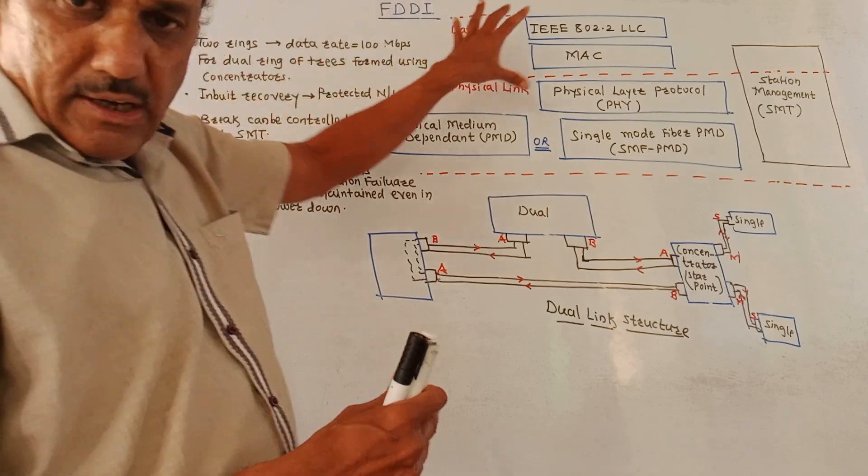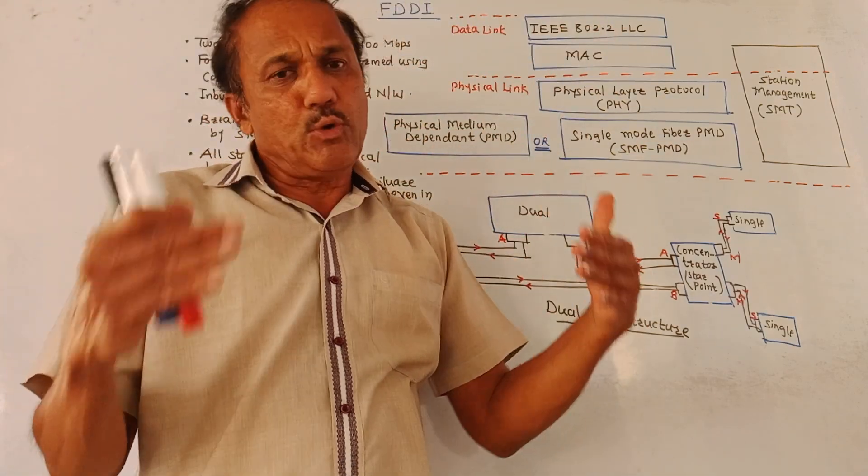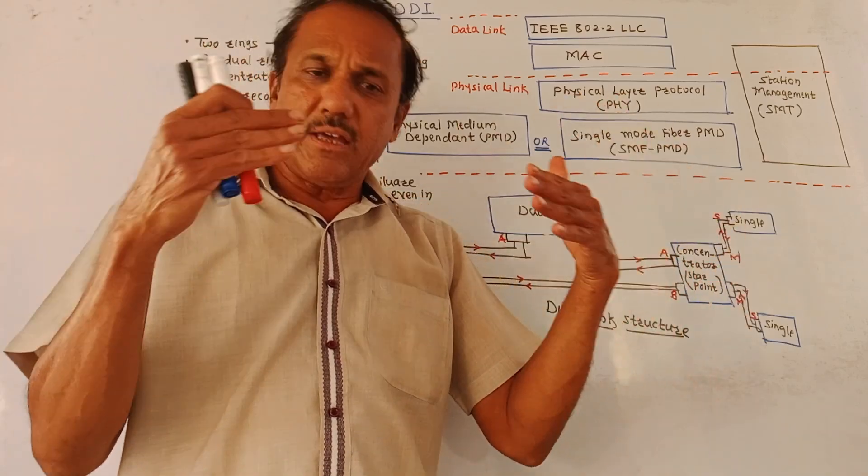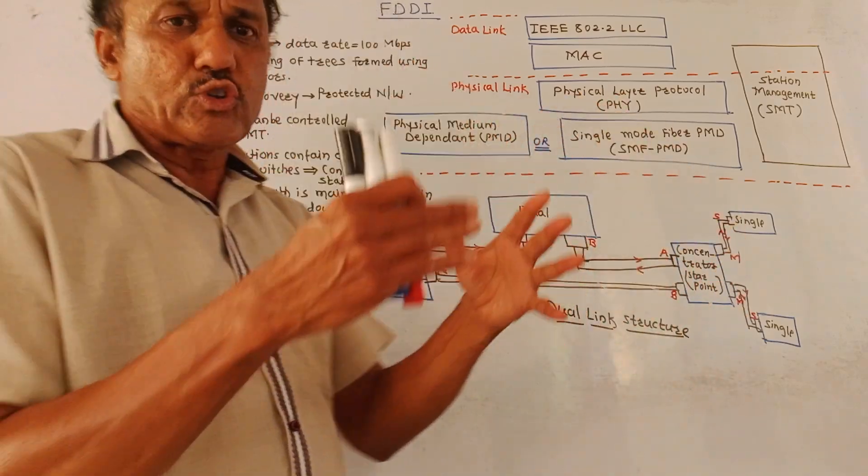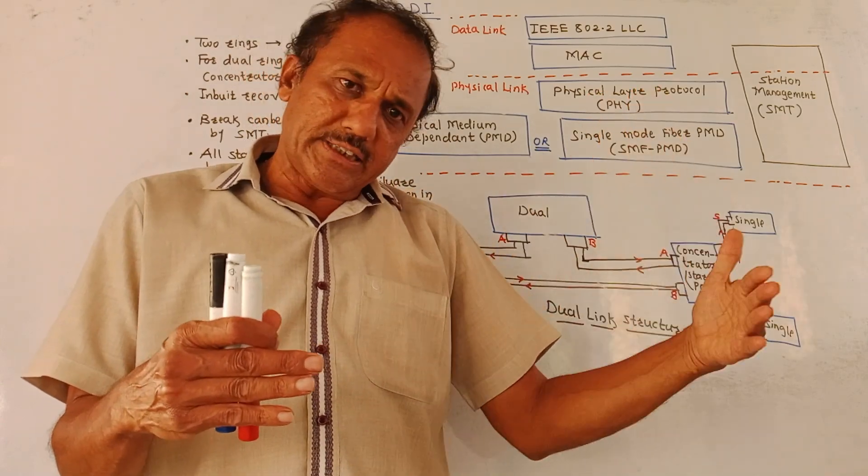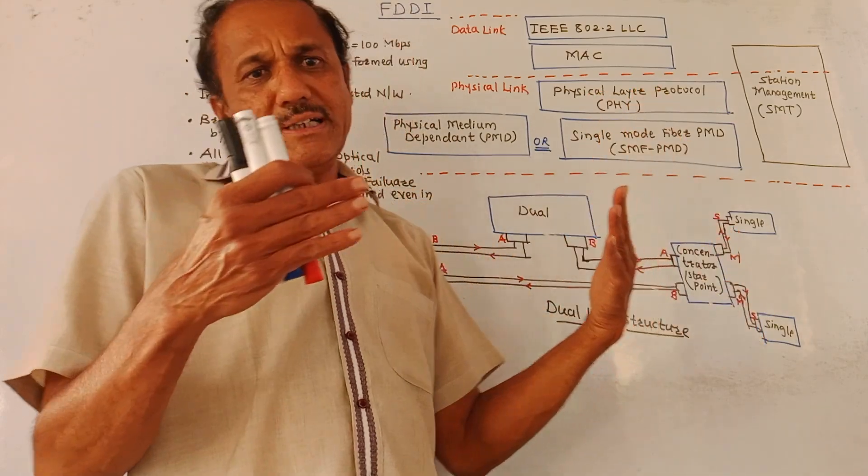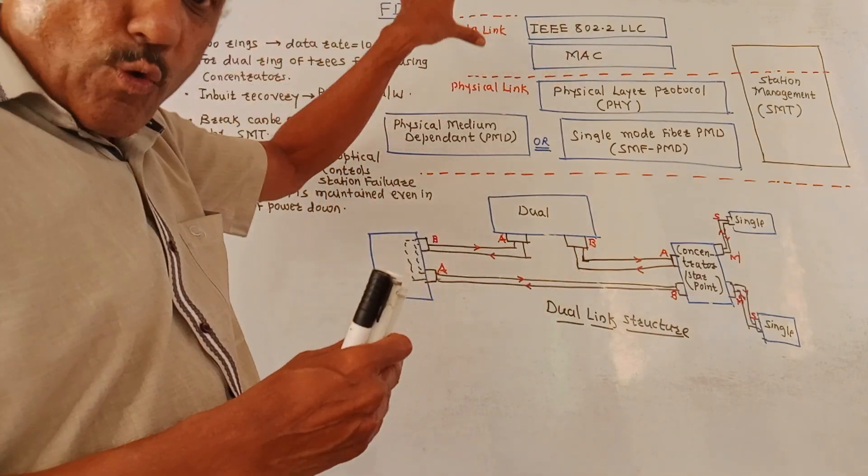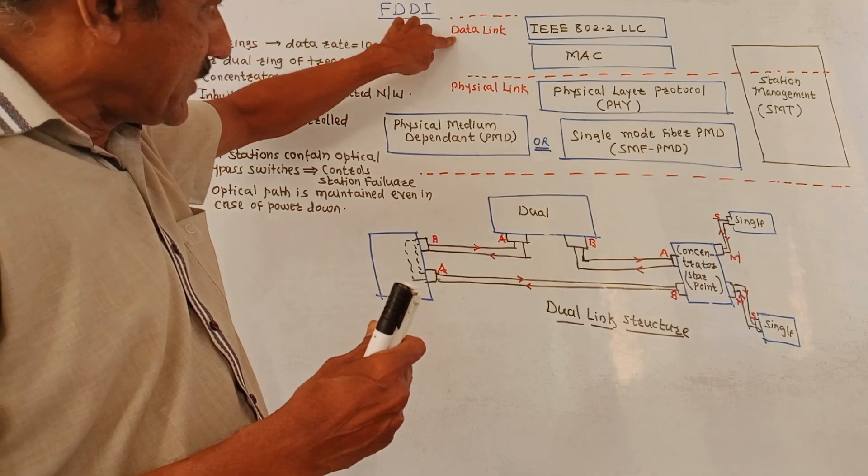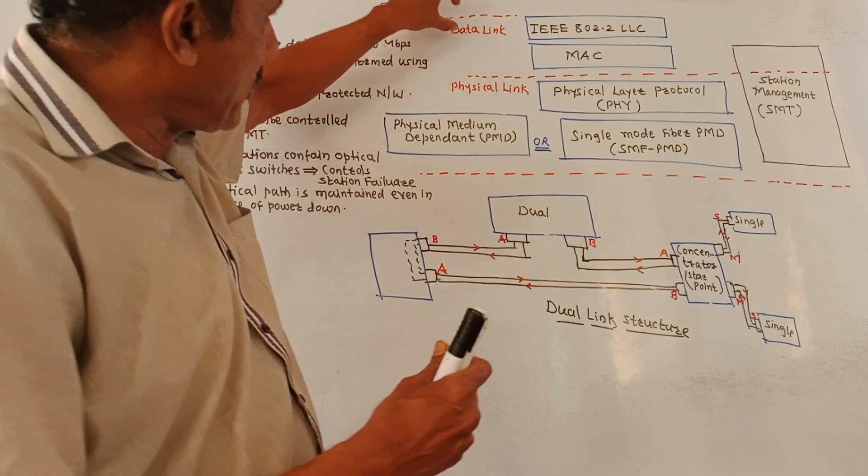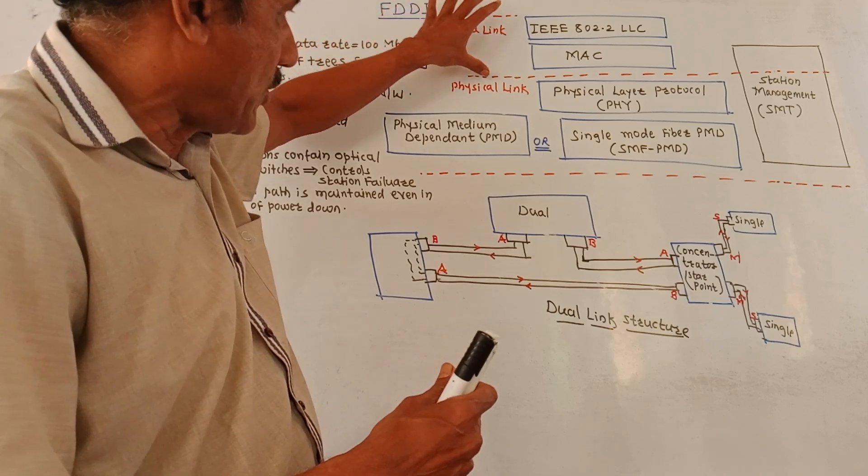Actually, you can achieve the data rate up to 100 Mbps and thousands of users can be interconnected by making use of this interface. You can achieve the LAN system around 200 kilometers length. As I said, this interface makes use of OSI model. Two main layers are used. One is physical link, this is the physical layer of OSI model. This is the data link layer of OSI model.